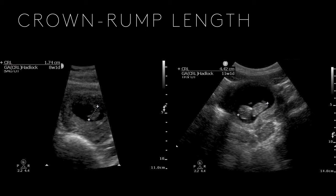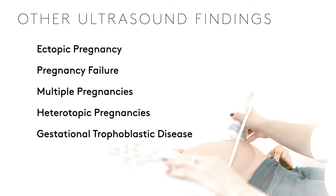That gives you about four images for your basic first trimester ultrasound protocol. We know normal pregnancies aren't the only thing you'll find. Other things you may identify include ectopic pregnancy, pregnancy failure, multiple pregnancies, heterotopic pregnancies, or molar pregnancies — all topics for future lectures. When you see things that violate what we've described as normal, start thinking down that list.